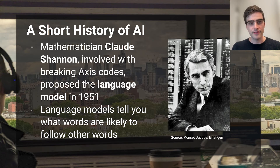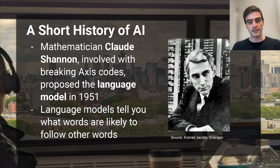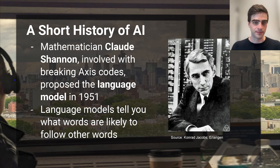He called this a language model. Language models give you a probability distribution over some vocabulary. Given some collection of words, the language model tells you how likely it is that those words appear in nature in conjunction. This is essentially what ChatGPT does.